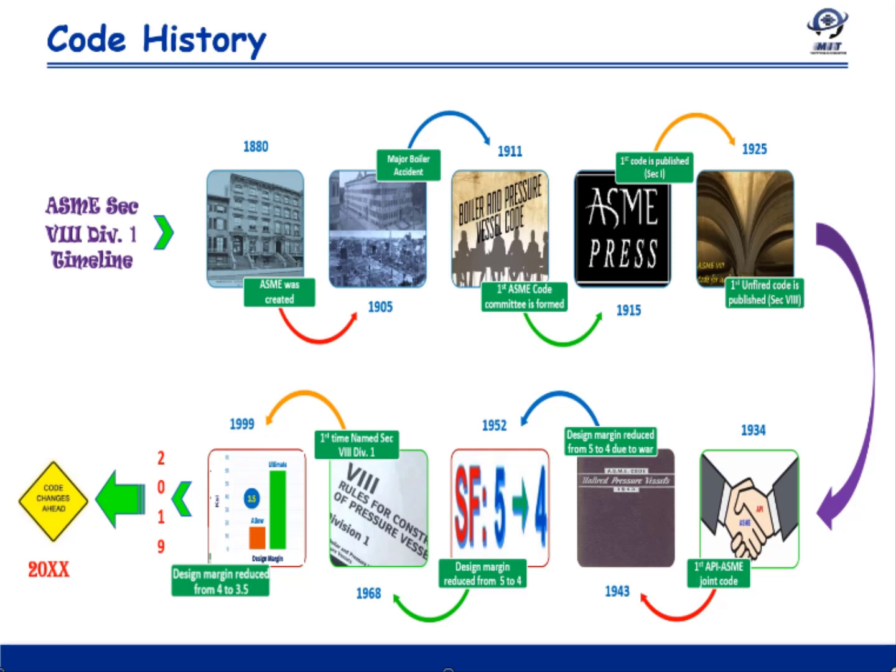In 1934, API and ASME jointly developed a code for Unfired Pressure Vessels in the hydrocarbon industry. API was working on the lines of only the hydrocarbon industry whereas ASME was for general industry, but in 1934 they joined forces to develop a joint code for the hydrocarbon industry.